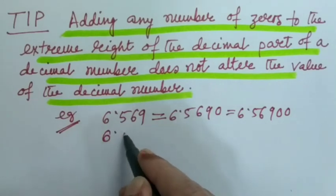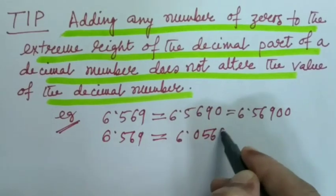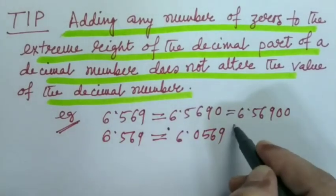But if we write like this, 6.569 is equal to 6.0569, then this is wrong.